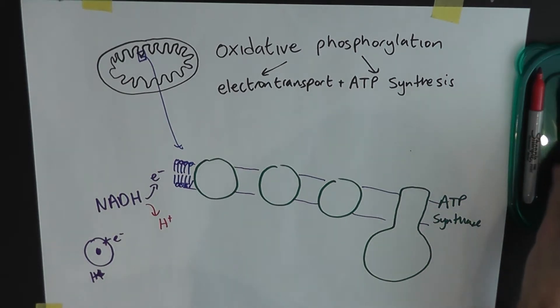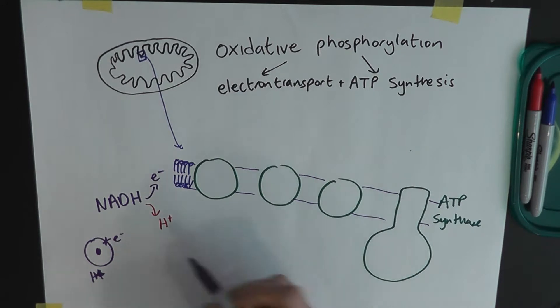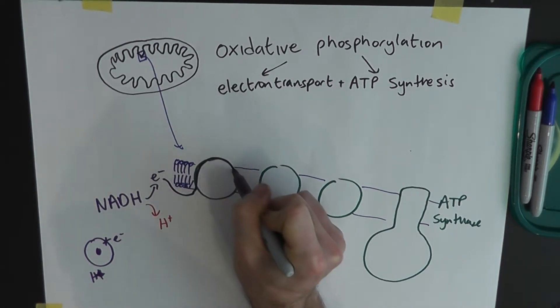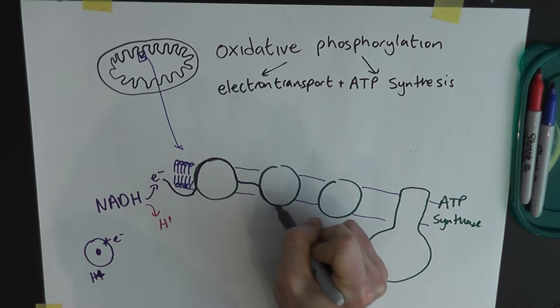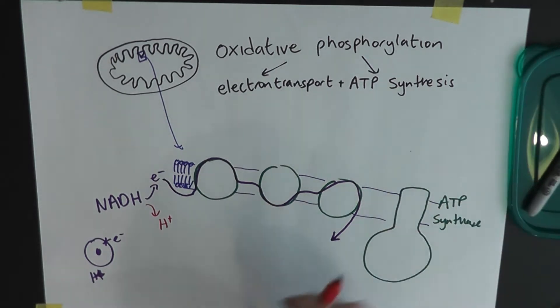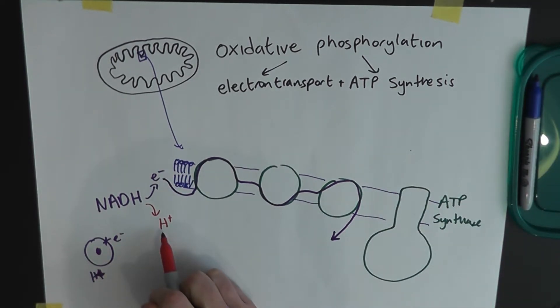And then we'll look at what happens to the electrons and these hydrogen ions, these protons. We'll deal with the electrons first. What they do is they move around these electron transport proteins through the membrane. And they provide energy to transport these hydrogen ions here.